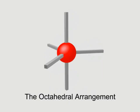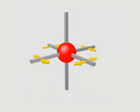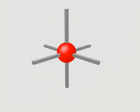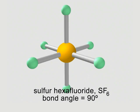The final common arrangement has six electron groups attached to the central atom. Repulsions are minimized when the groups point to the corners of an octahedron and thus lie 90 degrees apart. Sulfur hexafluoride has an octahedral shape.